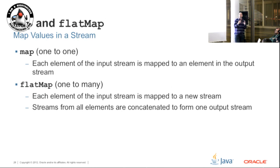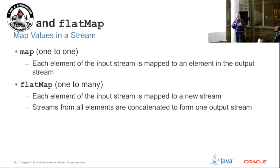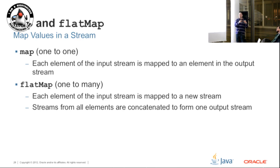Map and flat map: map is the idea where you take an input stream and generate an output stream by applying a function to each element - a one-to-one mapping. So input stream is students, output stream is the scores of those students - you're mapping from a student to a score. A flat map is a one-to-many mapping. Each element in the stream is processed in such a way that the result is itself a stream, giving you in effect a stream of streams. But quite often you don't want that - you want one stream on the output. So flat map will take those streams of streams, concatenate them, and give you a single stream as the output.